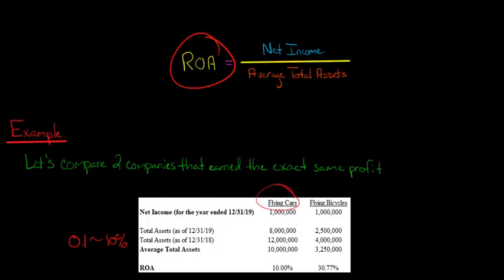But one of the companies, the Flying Cars, has a lot more total assets than the other company. Flying Cars has 10 million dollars in average total assets, whereas Flying Bicycles had 3,250,000 as average total assets. So basically, Flying Cars had more than triple the amount of assets to work with, and yet they ended up with the same net income.